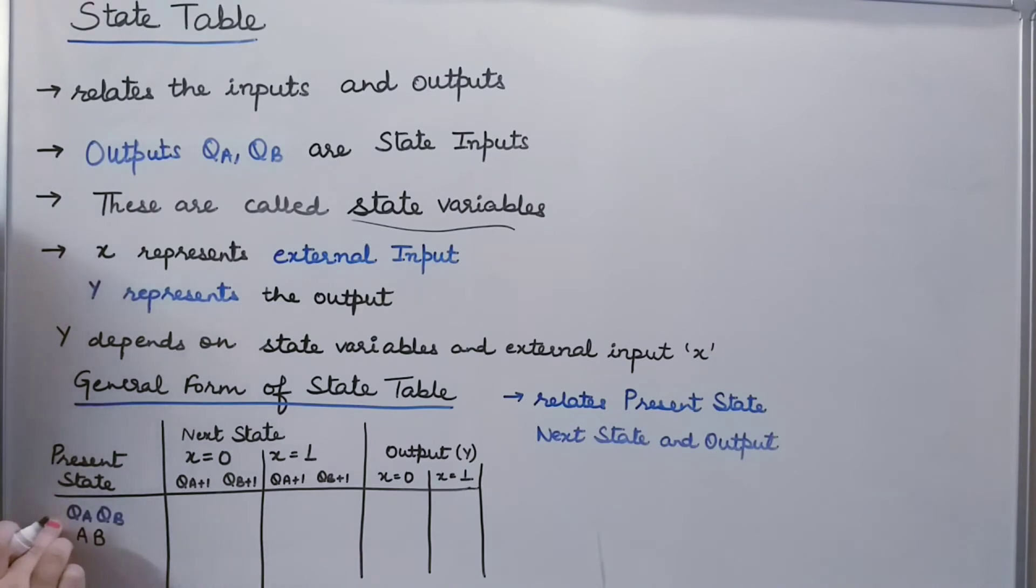If my present state is QA or QB, my next state will be QA plus 1, QB plus 1, which can also be simply written as A N plus 1, B N plus 1. That is one state next to the present state.